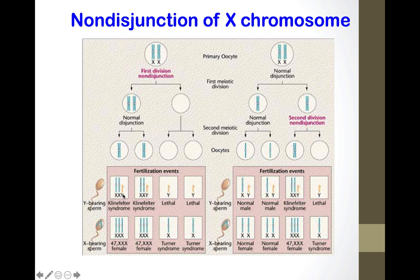If two X chromosomes are present in the egg and the sperm carries a Y chromosome, the result is XXY — Klinefelter syndrome. If the sperm carries X, the result is Turner or XXX depending on the configuration.